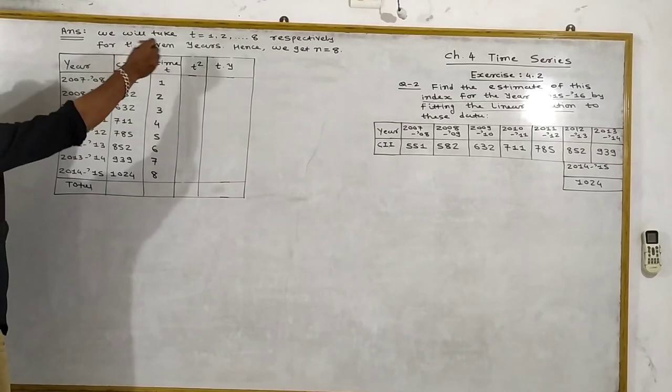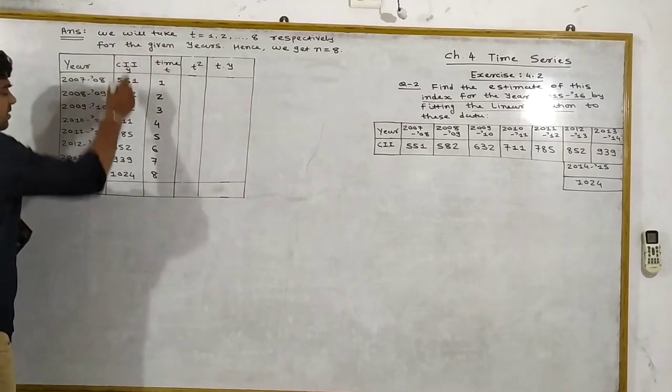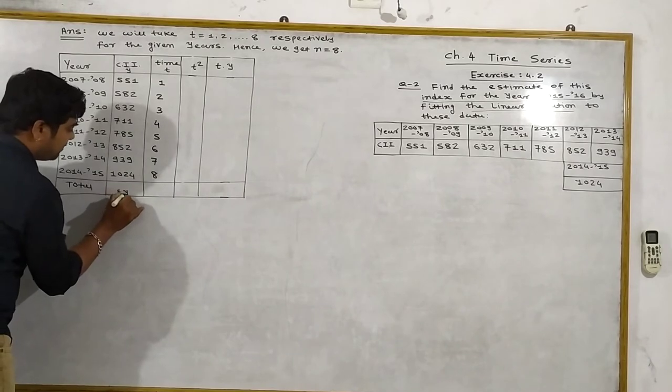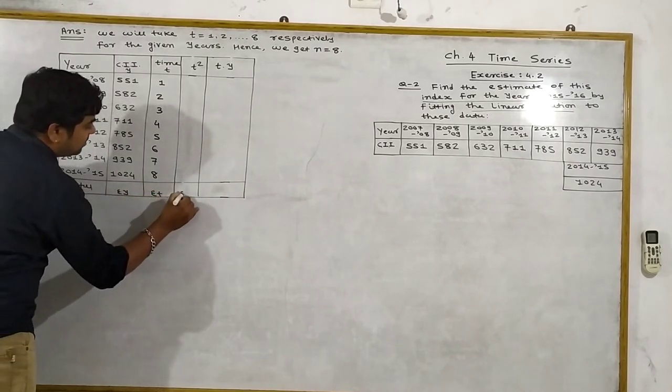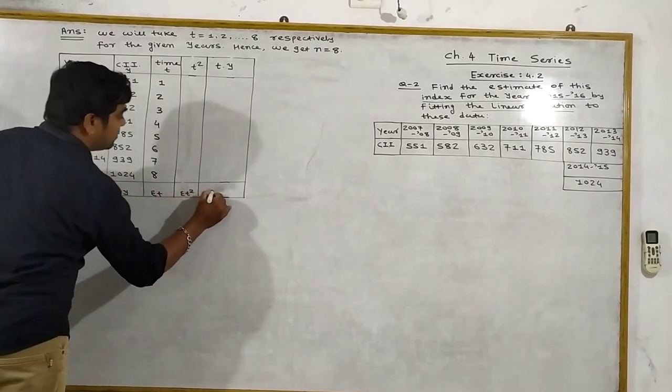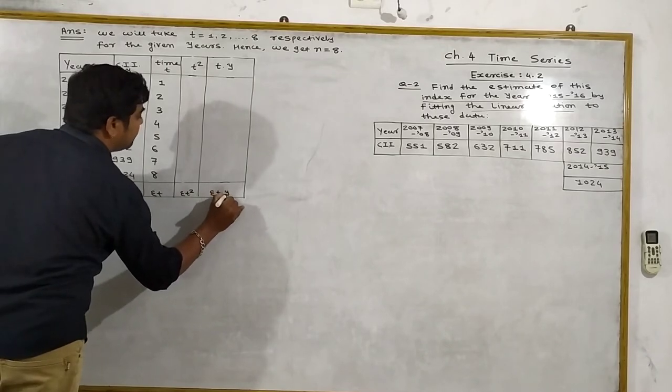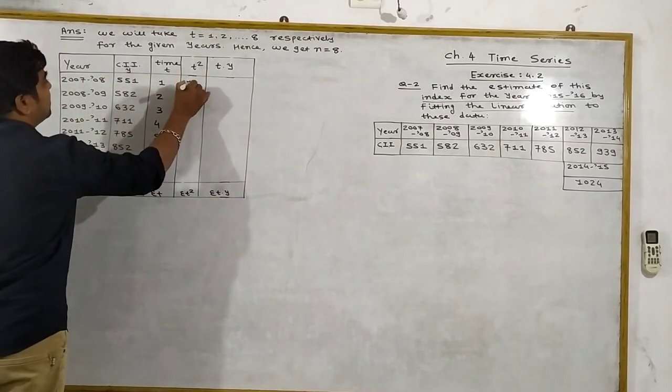Then CII, the values are given in the question. Now we have to set up columns: Sigma Y, Sigma T, Sigma T square, Sigma TY.